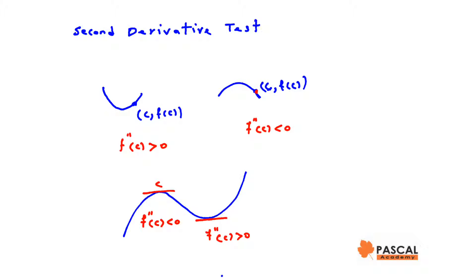Now let's suppose c is a point on the graph of the function where f prime of c and f double prime of c both exist, and f prime of c is 0 and the function is concave down at c. Then c and f of c is a local maximum.